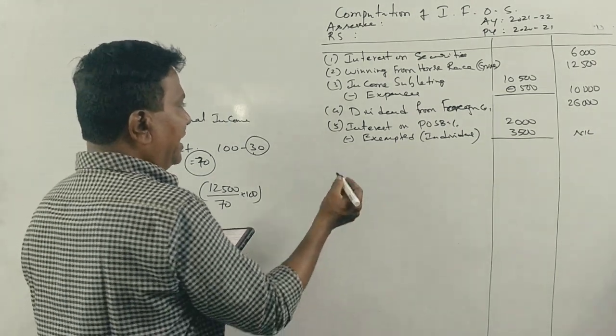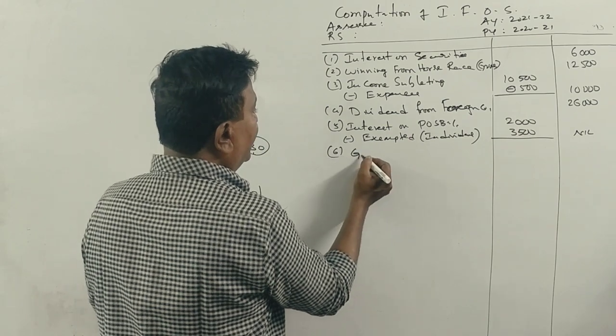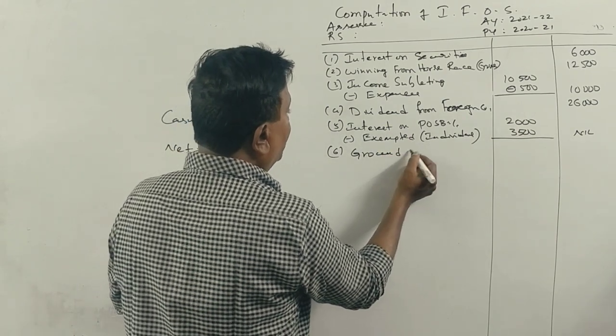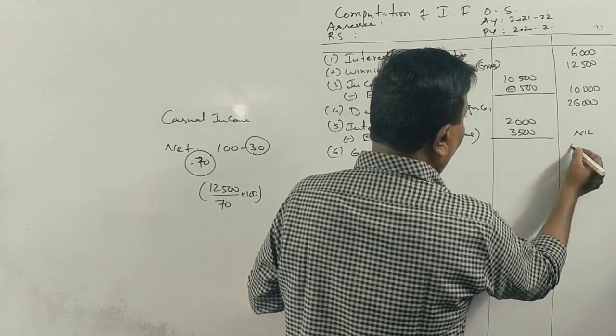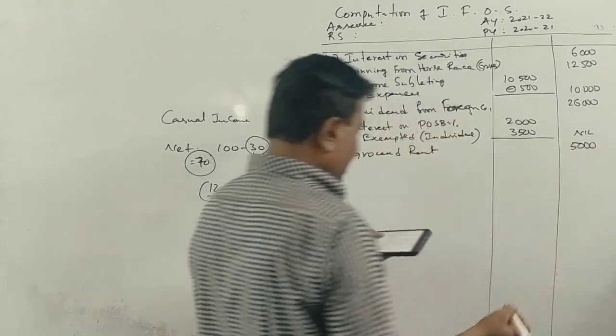Next, ground rent. Fully taxable. Is it the ground rent? Rs. 5,000, fully taxable.